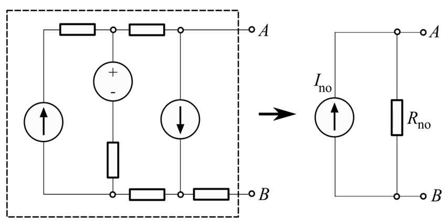Find the Norton resistance RNO. When there are no dependent sources, all current and voltage sources are independent. There are two methods of determining the Norton impedance RNO.